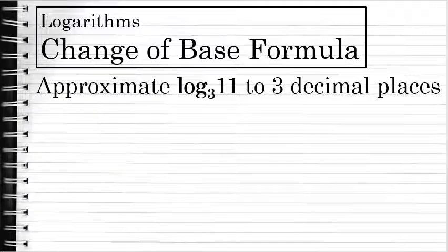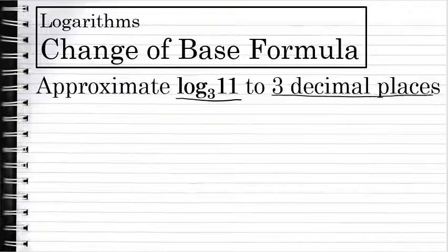In this problem, we're asked to evaluate log base 3 of 11 to three decimal places. Like most logarithms, log base 3 of 11 is irrational. It's a decimal that would go on forever without repeating or ending. But we're asked to approximate this to three decimal places.